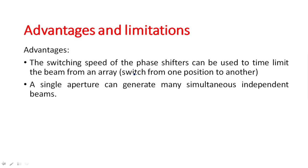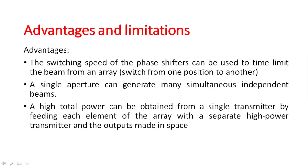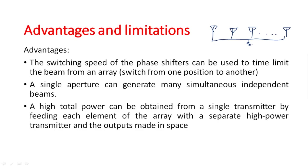A high total power can be obtained from a single transmitter by feeding each element of the array with a separate high-power transmitter and combining the outputs in space. In a phased array, n number of antennas are grouped together and all originated from a single power source, which is split among all the transmitting antennas so that each element contributes to generating a high-power radiation pattern.